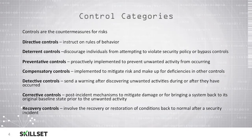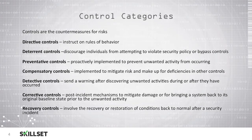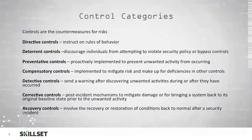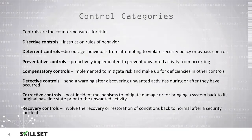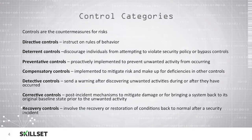Corrective controls are designed to minimize the impact of an incident and bring your systems back to their original baseline status before the incident occurred. An example of a corrective control is a fire extinguisher, used to extinguish a flame after it occurs to prevent damage to your systems and your facilities.